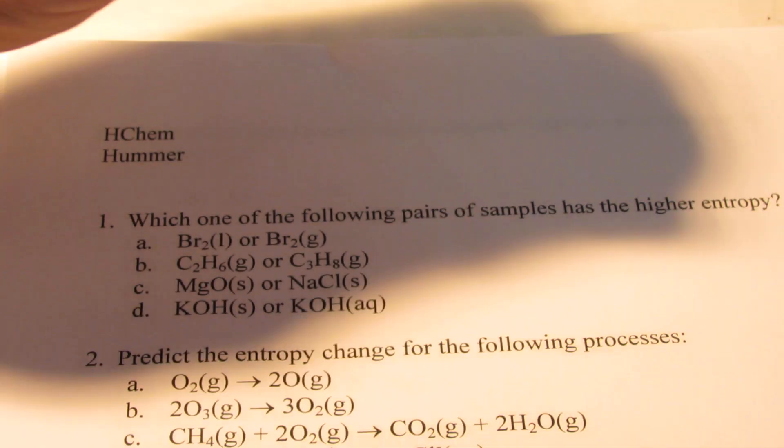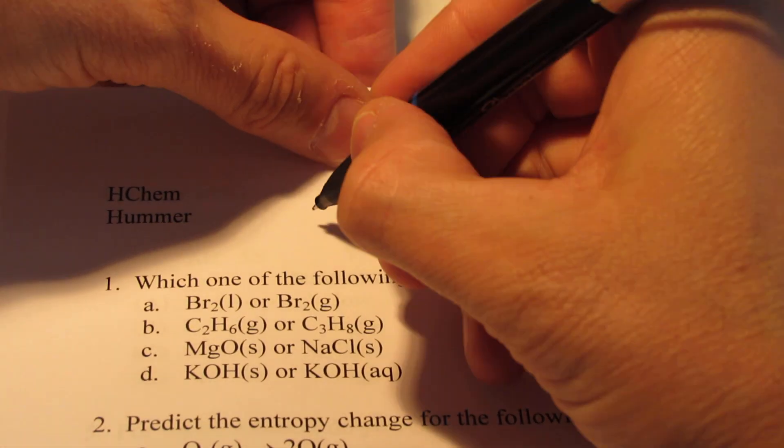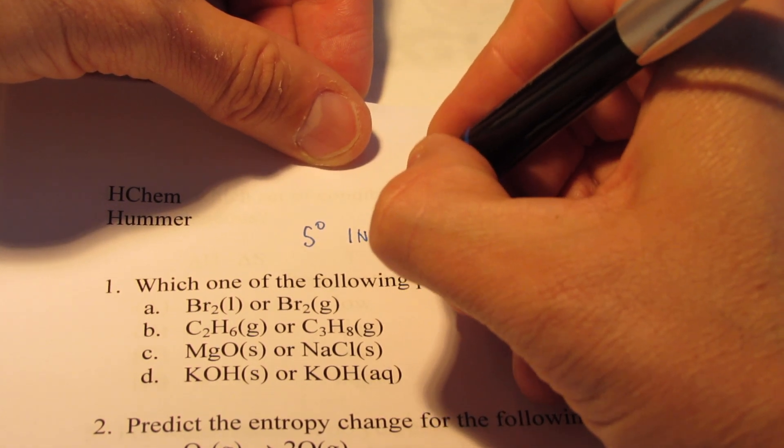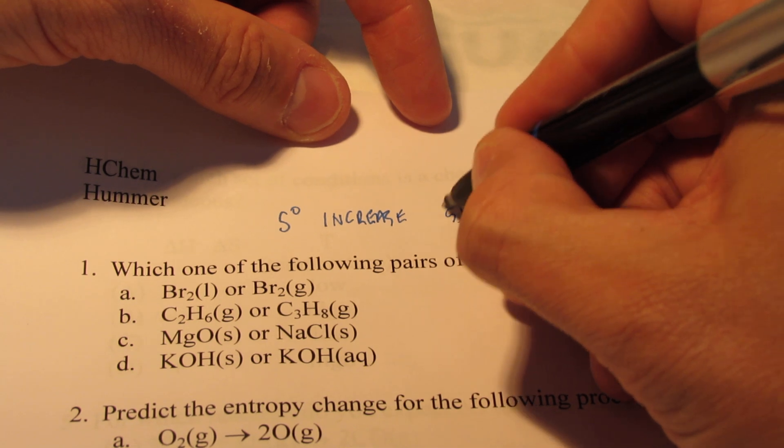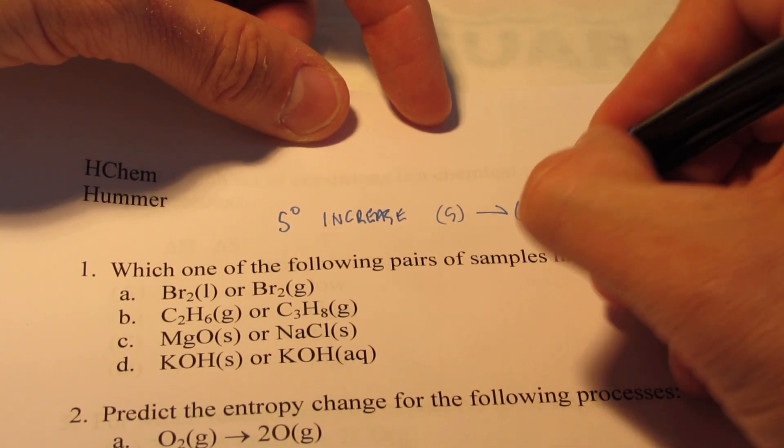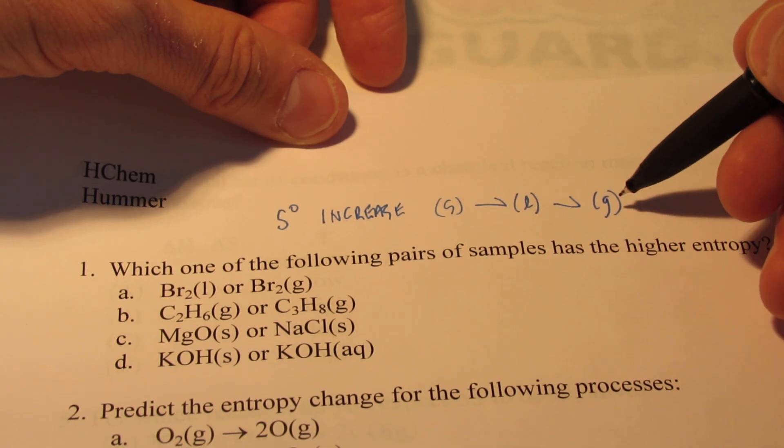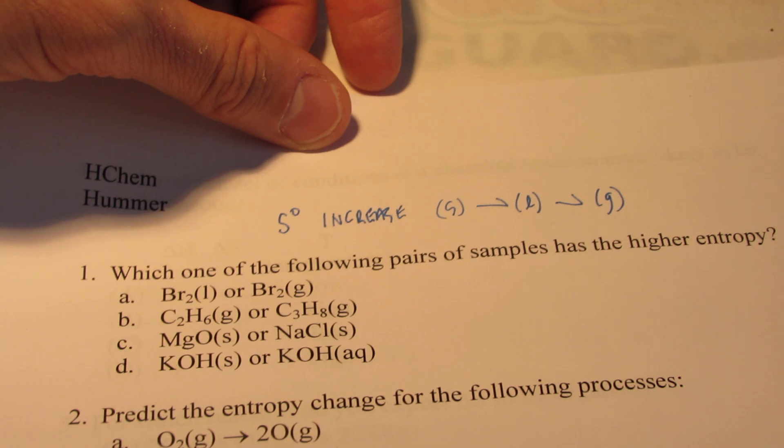We're going to start talking a little bit about entropy. And if you remember, the entropy values increase when you go from a solid to a liquid to a gas. So gases have a higher degree of entropy than liquids, and liquids have a higher degree of entropy than solids.